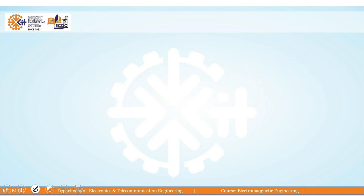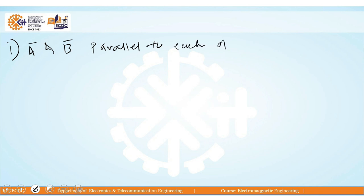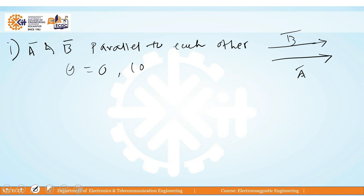We will see different cases of the dot product with different angles. Our first case: suppose vector A and vector B are both parallel to each other. Graphically, this is vector A and this is vector B. When two vectors are parallel to each other, the angle between them is always 0. Since cosθ = cos0 = 1, the result of the dot product A-bar dot B-bar is AB. So when two vectors are parallel, the result of the dot product is the product of the magnitudes of the two vectors.